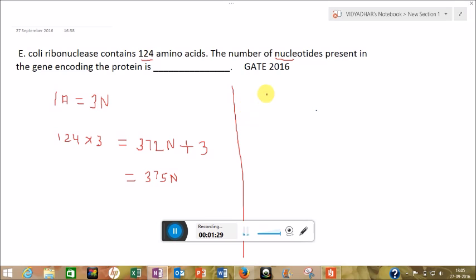So this is the answer: 375 nucleotides will code for 124 amino acids. Let's reverse this question. If they have given that there are 375 nucleotides, what will be the number of amino acids?